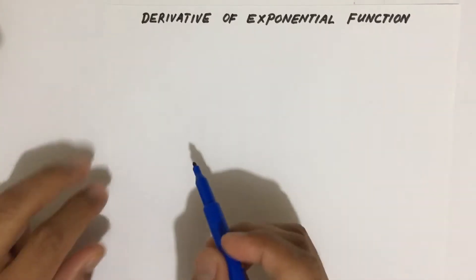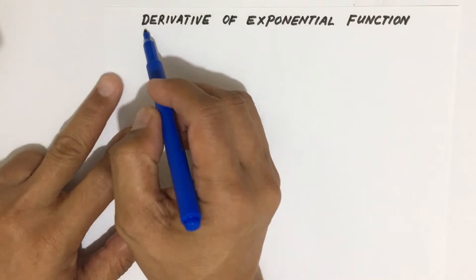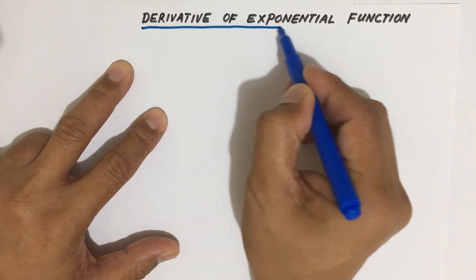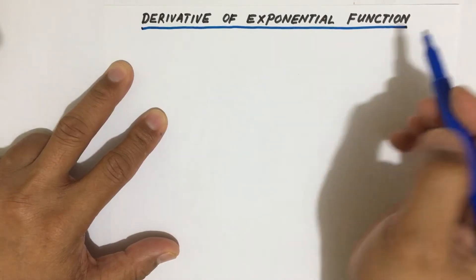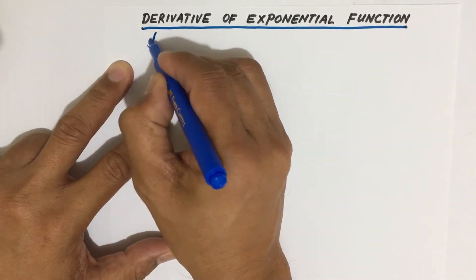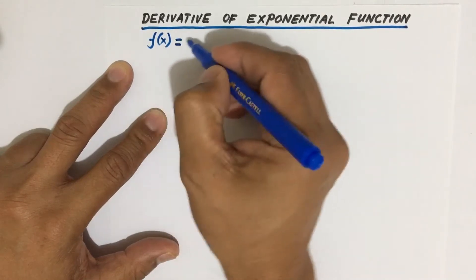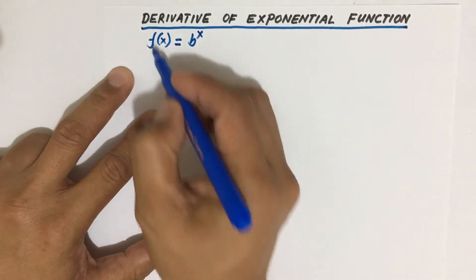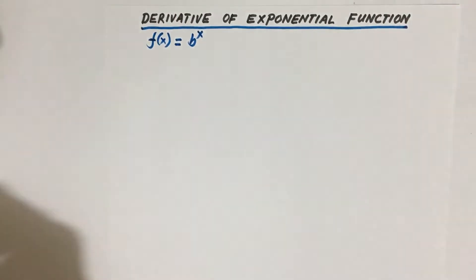Hello class, let us continue our discussion. Our topic is derivative of exponential function, so our focus now is for the given function f(x) in the form of b to the x.